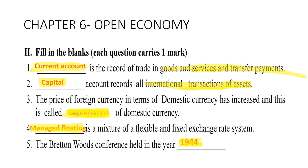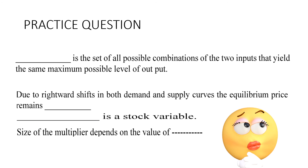Fourth: managed floating is a mixture of flexible and fixed exchange rate systems. Fifth: the Bretton Woods conference was held in the year 1944. Try to recall the answers for these five fill-in-the-blanks as a practice question.